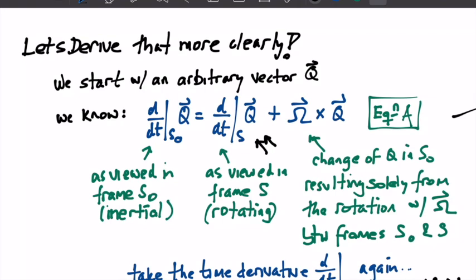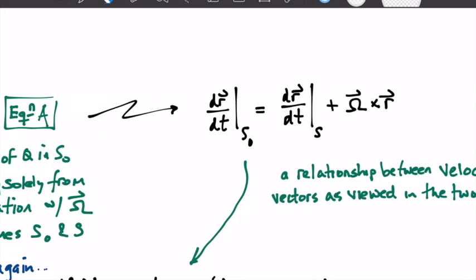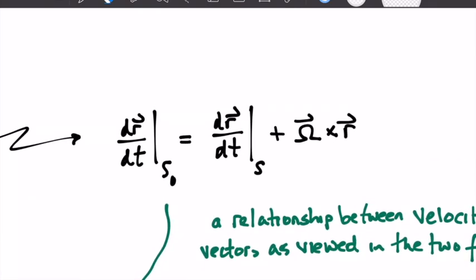This equation is really all we need to derive the pseudoforces seen by observers in accelerating frames. Because it's all we'll need, we're going to give it a name and call it equation A. We can start by writing this equation for when the vector Q here is a radius. That relates the velocity in the inertial frame to the velocity of an object in the rotating frame, plus the cross product of the angular velocity vector and the position of that object in the rotating frame.